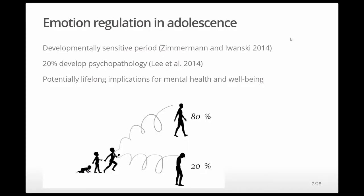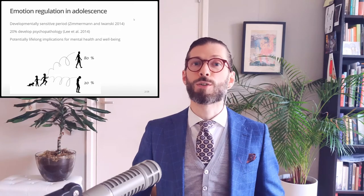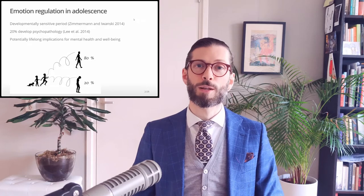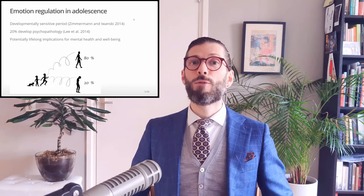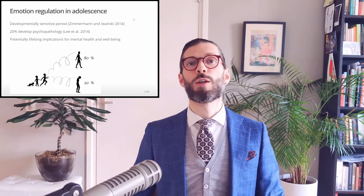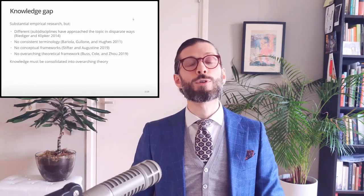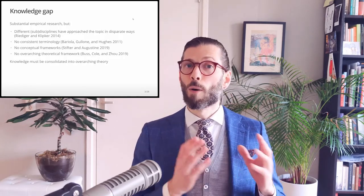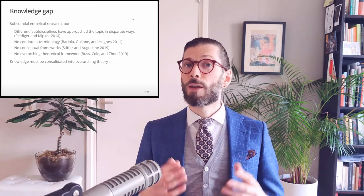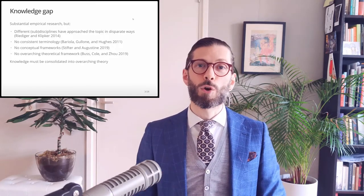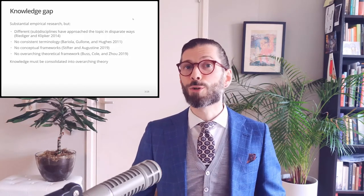Adolescence is a life phase that presents youth with new challenges in life and love. For four in five adolescents this promotes the development of mature emotion regulation skills. But as many as one in five instead experience severe difficulties in emotion regulation that lay the foundation for psychological problems later on in life. Now because this problem is so prevalent and its consequences are so dire, both for the affected youth and society at large, there is a lot of research interest in this topic. But despite the abundant empirical research in this area, several authors have noted the lack of a unifying theoretical framework.